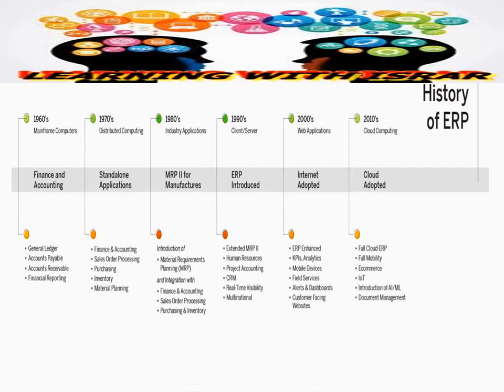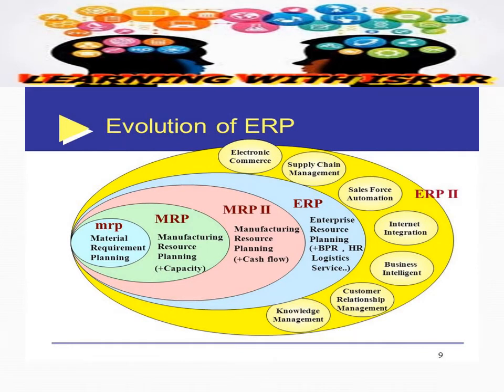This slide shows simply how ERP evolved. It started from Material Requirement Planning, then Manufacturing Resource Planning plus capacity, then MRP2 which is Manufacturing Resource Planning plus cash flow, then ERP — Enterprise Resource Planning — adding BPR, HR, and logistics services. It further expanded to include e-commerce, supply chain management, sales force automation, internet integration, business intelligence, customer relationship management, and knowledge management. This is the way ERP has evolved in business.